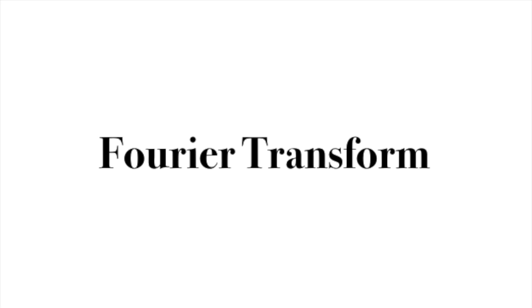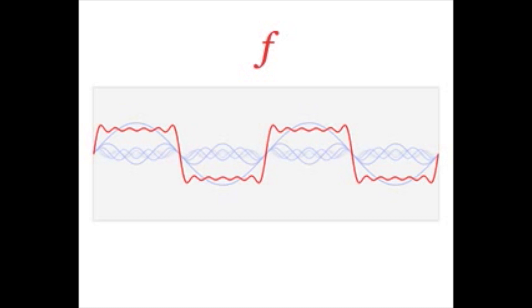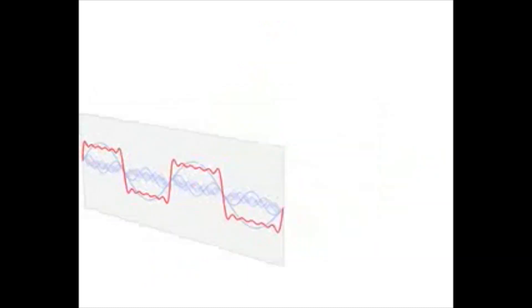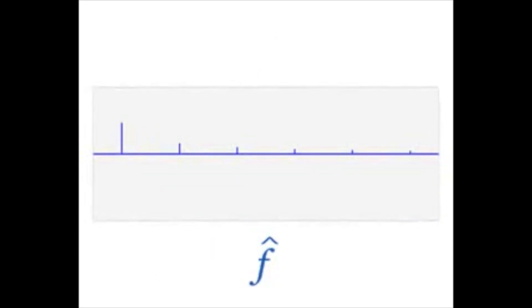It turns out there's a very powerful mathematical tool called the Fourier transform that can help us. This tool relies on the fact that a well-known set of repeating functions, the sine and cosine functions, can act as the ingredients, or basis functions, for a recipe to reconstruct any repeating function. And the Fourier transform provides us with that recipe.